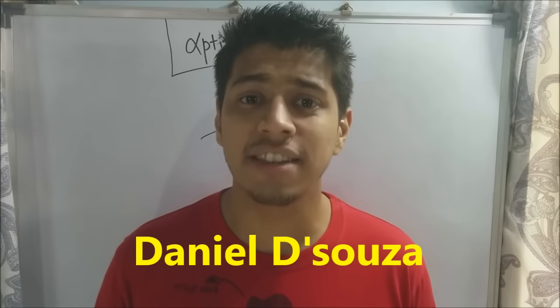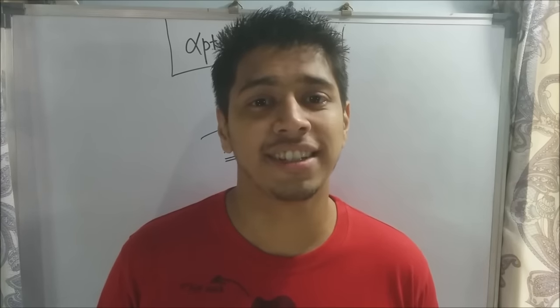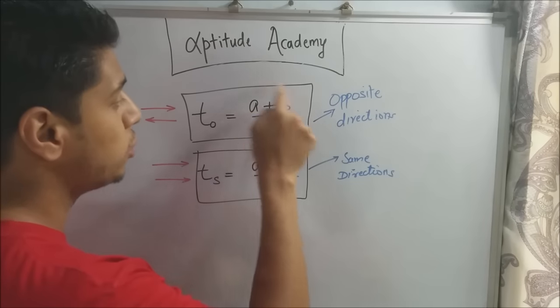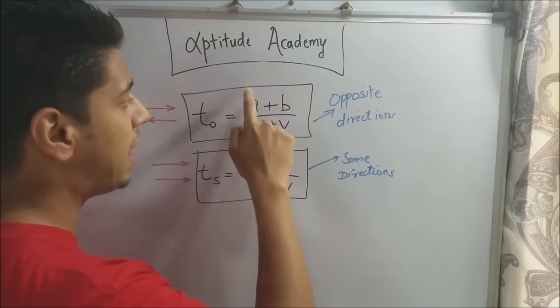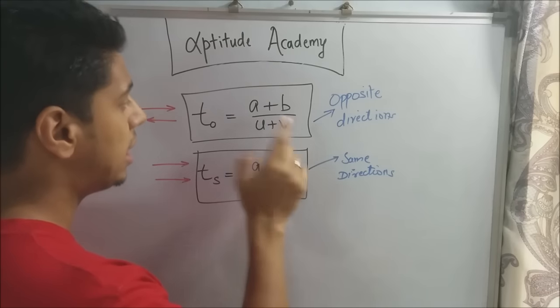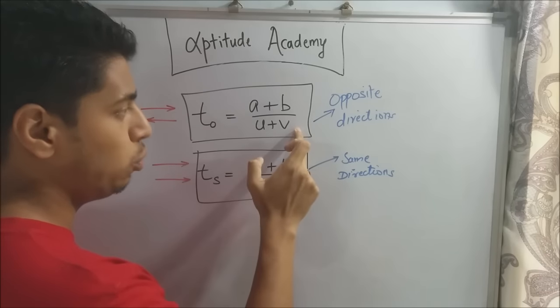Now before we start solving our first sum, let us revise the formula that we derived in the first lecture. The time taken for two trains to cross each other of length a and b that are moving with speeds u and v is equal to a plus b divided by u plus v.